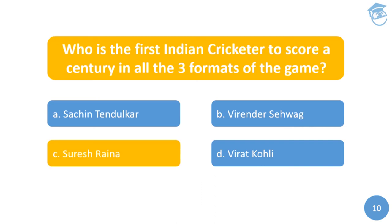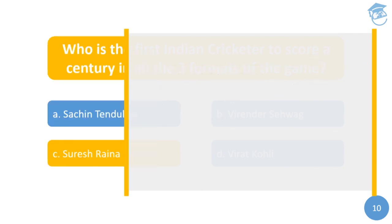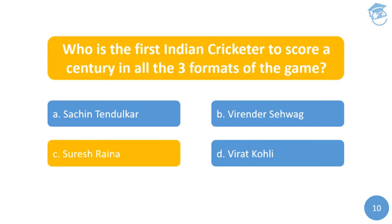The answer is Suresh Raina — the first Indian cricketer to score a century in all three formats of international cricket. He scored 101 against South Africa in T20 (his only T20 century), scored 120 runs in Tests, and scored five ODI centuries with a highest of 116. That's all for today, but we'll continue with more cricket questions. Do share it with your friends and pose them a challenge — see you in the next round!